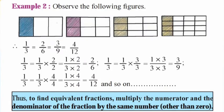Example 2. Observe the following figures. 1/3 is equal to 2/6, is equal to 3/9, is equal to 4/12. 1/3 is equal to 1/3 multiplied by 2/2. So, 1 times 2 is 2, and 3 times 2 is 6.